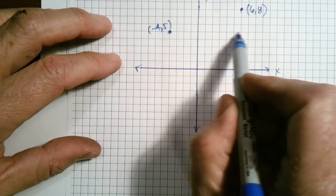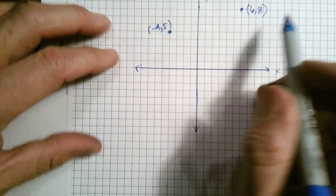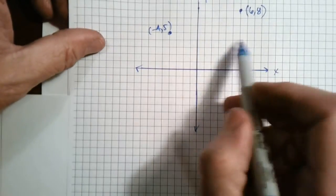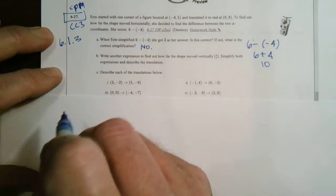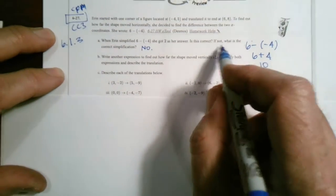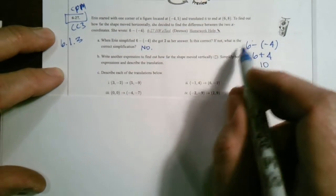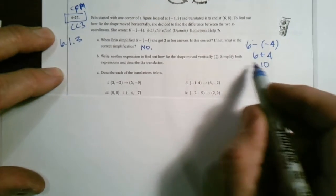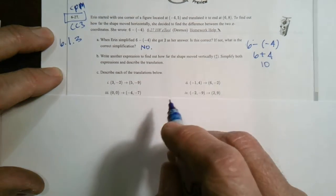That change in X is 10. So is she correct? No, she's not correct. What is the correct simplification? The correct simplification would be 10.